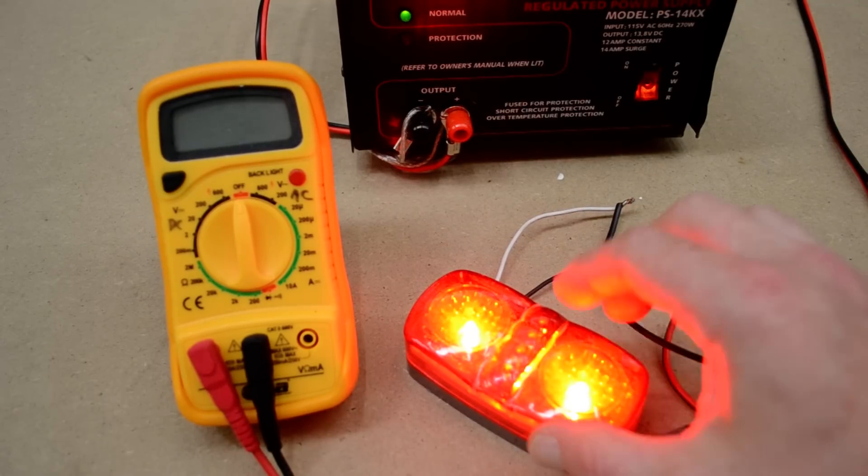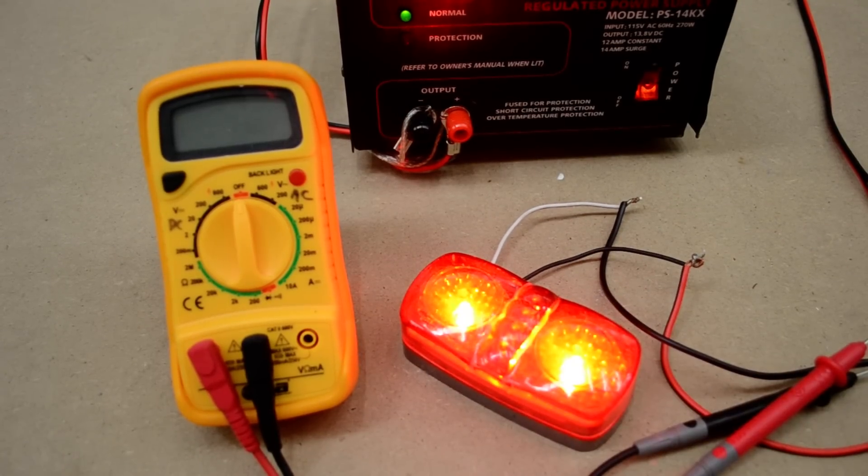This is a standard 12-volt light, and I want to get an amperage draw so I can appropriately size a fuse to protect this circuit, since this is going to be an additional light for a trailer.